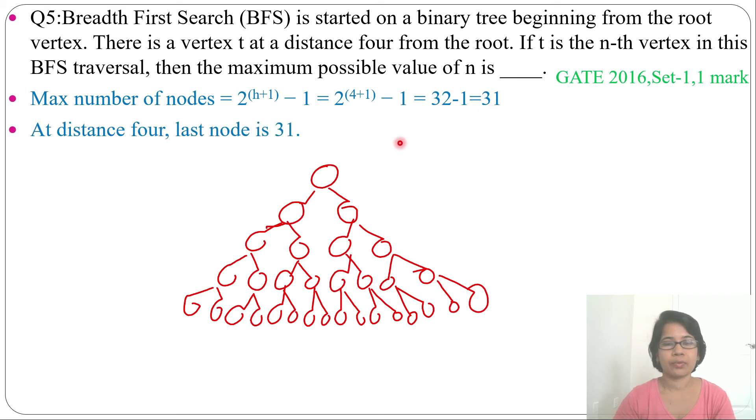At distance 4, last node is 31. So this node number is 31. If you will do BFS at 31 times, so this node will come. You don't need to do graphical representation.